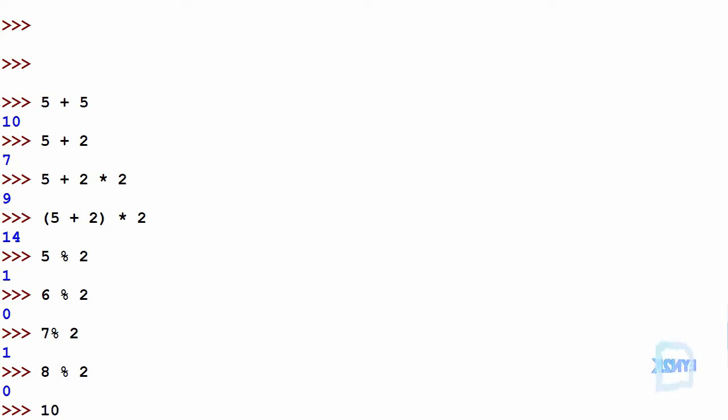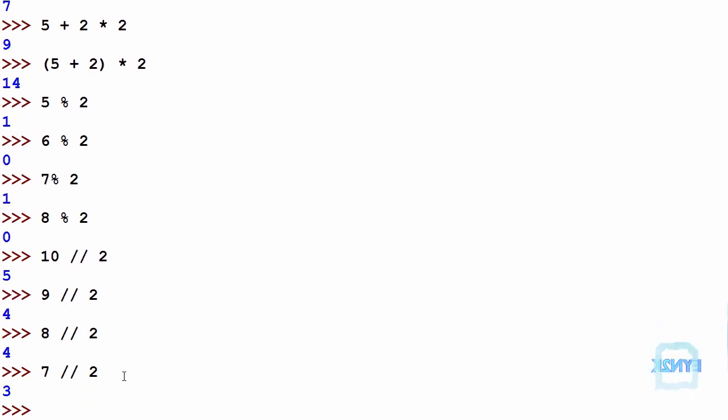The floor division works like so: 10 floor 2 gives us 5, 9 floor 2 gives us 4, 8 floor 2 gives us 4, and 7 floor 2 gives us 3. This is the amount of times the number on the right goes into the one on the left. So 2 goes into 10 five times, 2 goes into 9 four times, and 2 goes into 7 three times.